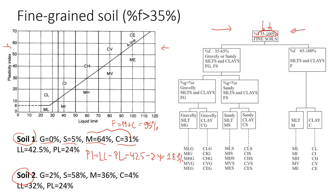The first step is to look at the amount of fines. For this soil we have 95 percent fines, so we go to the right on the flowchart because it covers fines from 65 to 100 percent, and 95 percent falls in that range. This means the soil is going to be silt or clay.